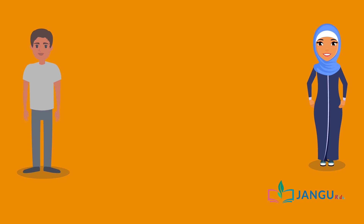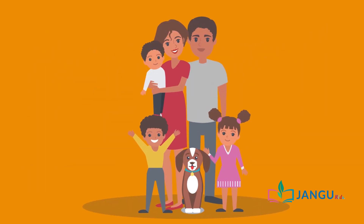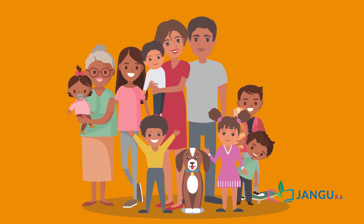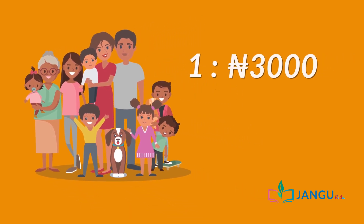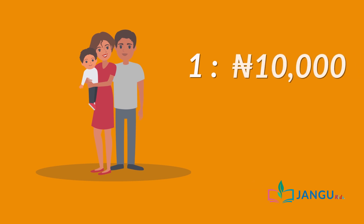Let's look at what this means using our earlier examples. Mr. Jack earns 30,000 naira and his family size is 5. If Mr. Jack's family size increases to 10, then the family size to resources ratio would be 1 to 3,000. But if the family size is reduced to 3, the ratio would be 1 to 10,000.